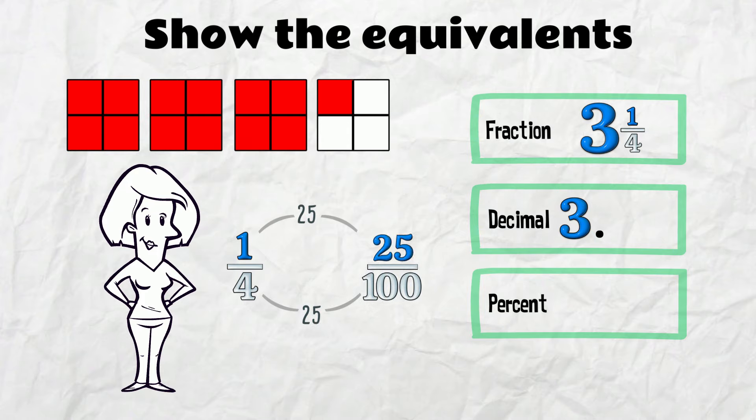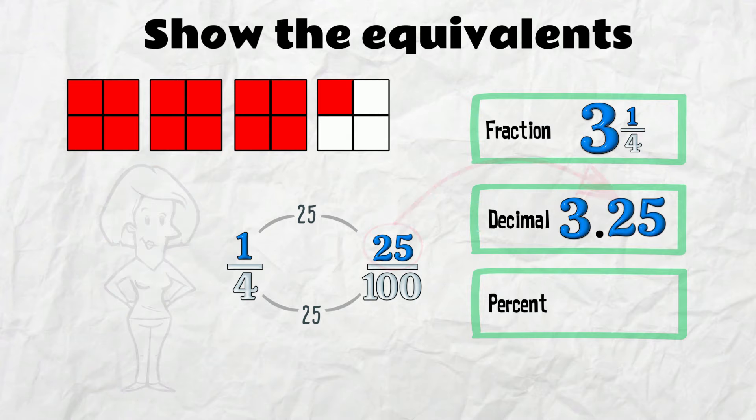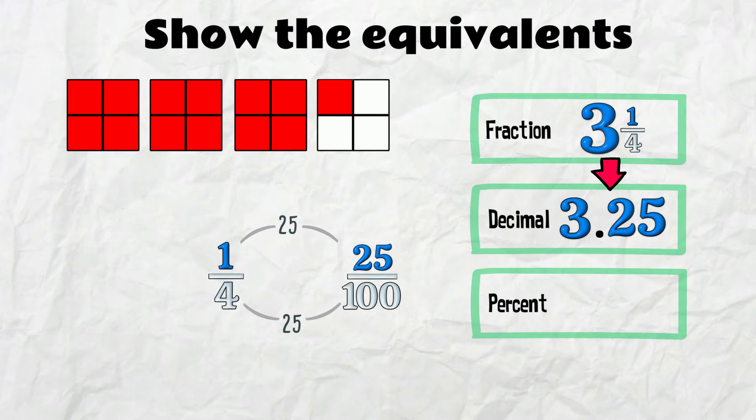25 over 100. The decimal part is 0.25. 3 and 1 quarter equals 3.25 as a decimal.